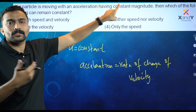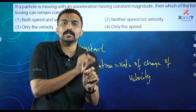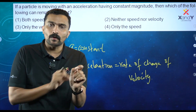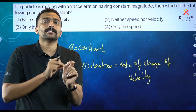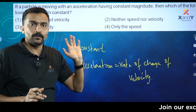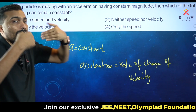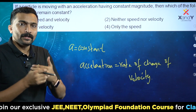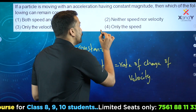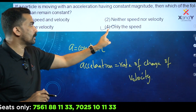There is acceleration. If an object is moving in circular motion, and we talk about constant speed — the speed will be constant. But velocity is changing because direction is continuously changing. That is the acceleration. Which of the following can remain constant? It is only the speed. The majority of students will choose 'speed nor velocity' but the correct answer is option 4.